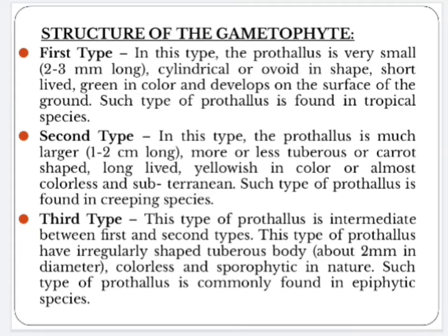The second type of prothallus is much larger — 1 to 2 cm long, more or less tuberous or carrot-shaped, long-lived, yellowish or almost colorless and subterranean. Such type is found in creeping species of Lycopodium. The third type of prothallus is intermediate between the first and second types — irregularly shaped tuberous body about 2 mm in diameter, colorless and saprophytic in nature — commonly found in epiphytic species.